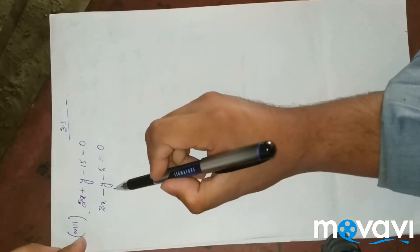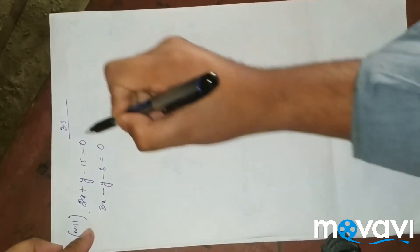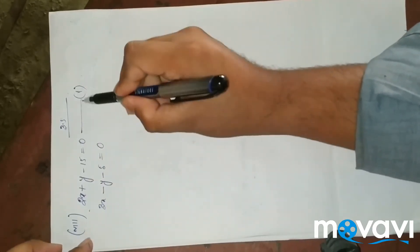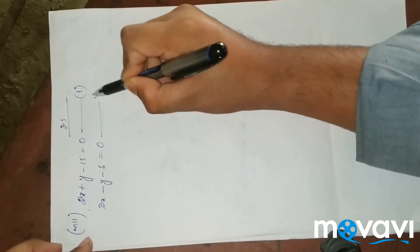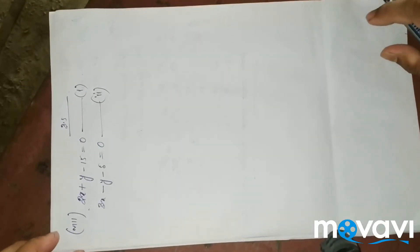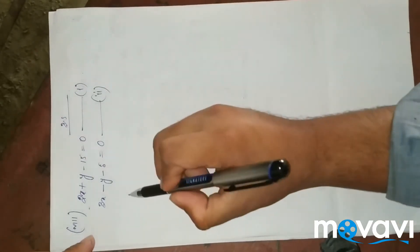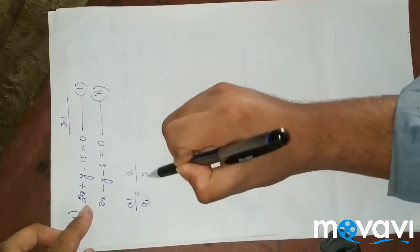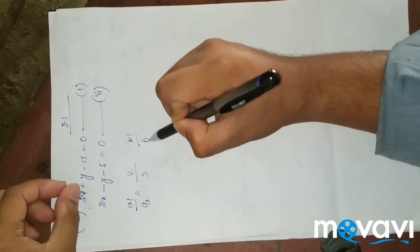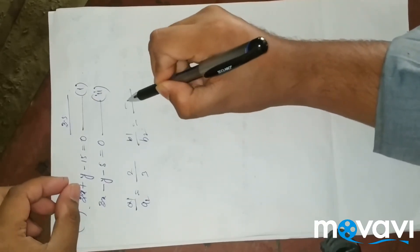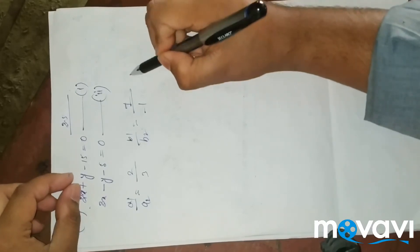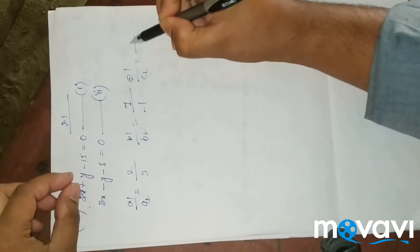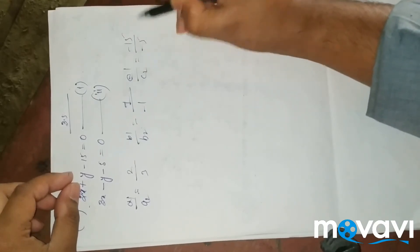We are going to start to do this. So this is the standard form: 2x plus y minus 15 is a number, and 3x minus y minus 5 is a number. So we have a1 by a2, b1 by b2, c1 by c2. So a1 by a2 is 2 by 3. b1 by b2 is 1 by minus 1. And c1 by c2 is minus 15 by minus 5.